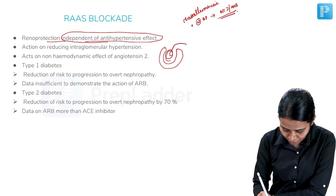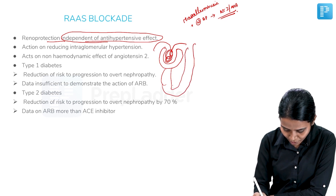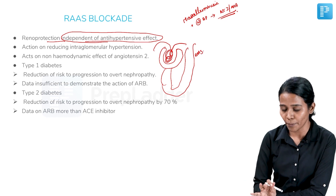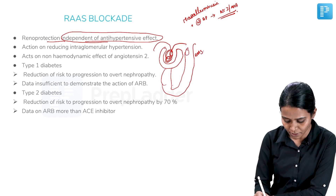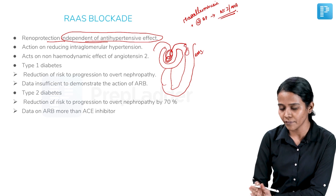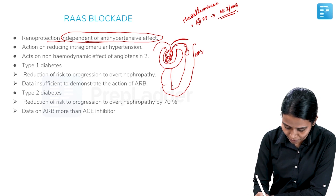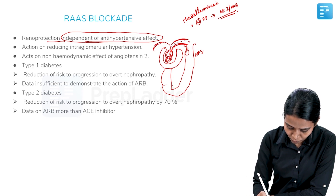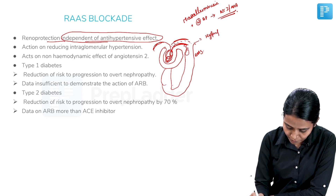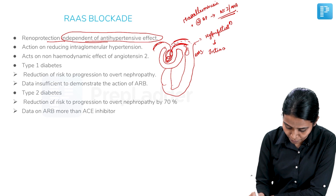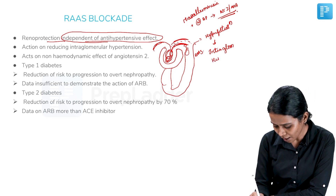This is the afferent arteriole, capillaries, efferent arteriole. Here in the distal tubule is the RAS system. The macula densa will act on the afferent arteriole and release renin when required. In diabetes, there is afferent arteriolar vasodilatation, so a lot of blood is going to come in and lead to hyperfiltration or intraglomerular hypertension.